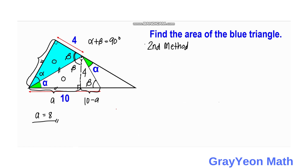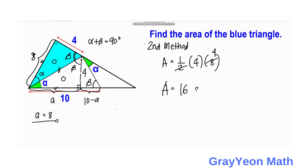Since A equals 8, and the smaller white right triangle is congruent with the blue right triangle, the corresponding side of the blue triangle is also 8 units. We can now find the area: area equals one half times base times height equals one half times 4 times 8, which simplifies to 16 square units. That is our answer for the second method as well.